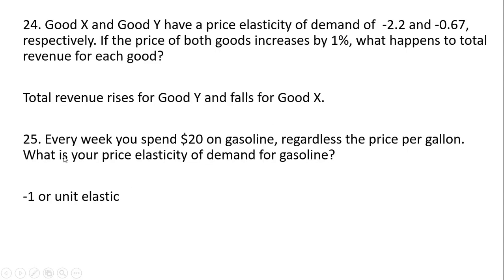Question 25: Every week you spend $20 on gasoline regardless of the price per gallon. What is your price elasticity of demand for gasoline? It's unit elastic — minus 1. For example, if the price of gasoline is $4 you'll buy 5 gallons, spending $20. The next week the price is $2 a gallon and you buy 10 gallons, also spending $20.